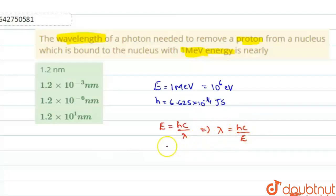So when you substitute hc and E, you will get the wavelength lambda. So h is 6.625 × 10^-34, c is 3 × 10^8, divided by E. E is in electron volts, you will write it as...